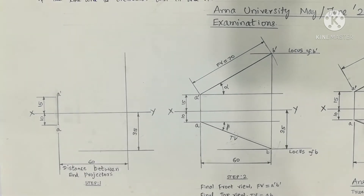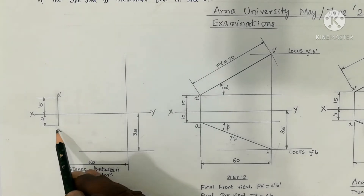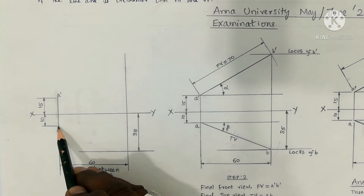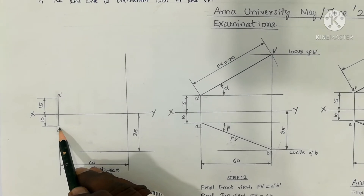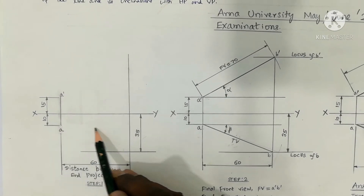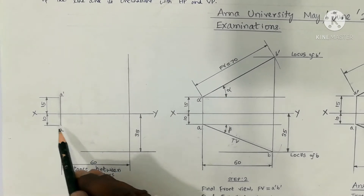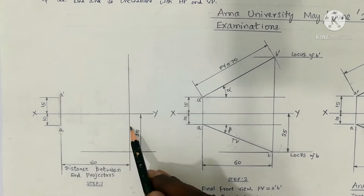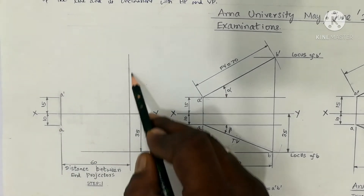The distance between the end projectors is 60mm. So mark the end projectors 60mm apart.